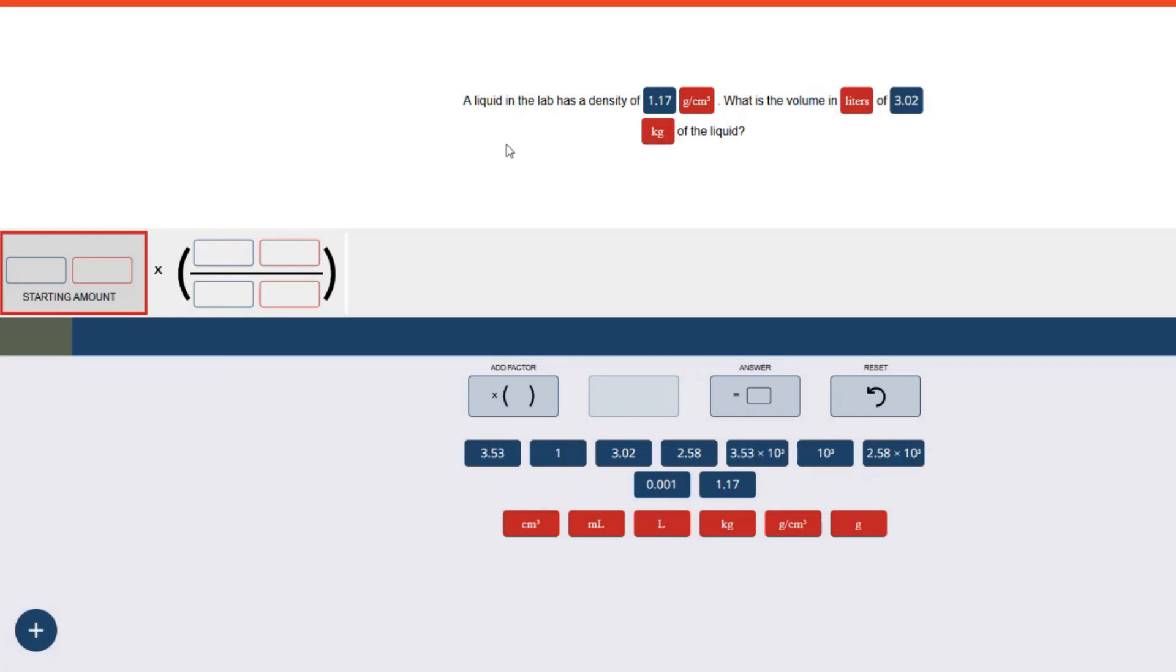A liquid in the lab has a density of 1.17 grams per cubic centimeter. What is the volume in liters of 3.02 kilograms of the liquid?